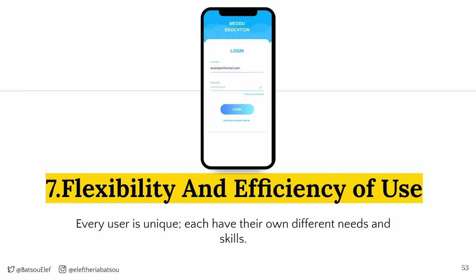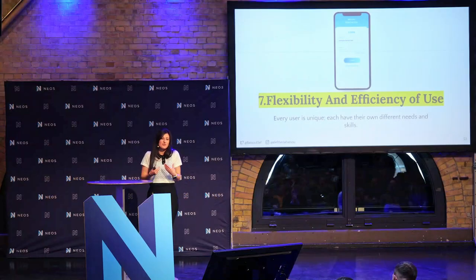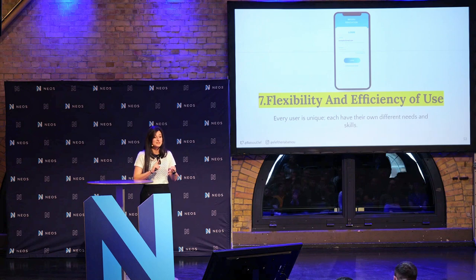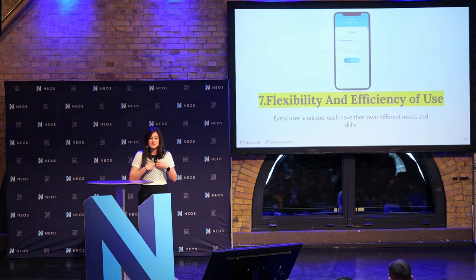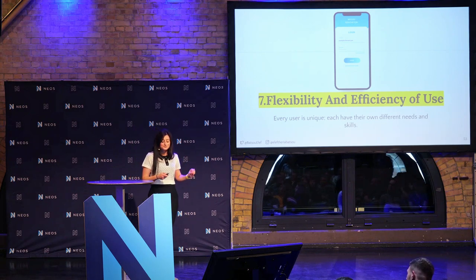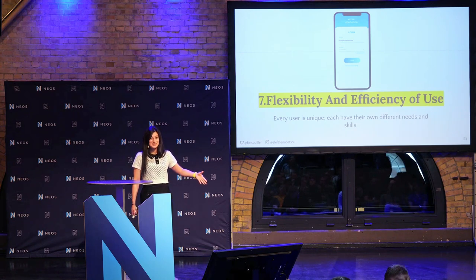The seventh rule is flexibility and efficiency of use. We have different kinds of users: first-time users and power users who work on our product every day and know how things work. We want to provide things for both types and those in the middle. First-time users may need documentation and guidance, while power users want to do things fast, maybe extend the product or connect it with something else. We should be able to provide something for everyone. Sometimes we forget about first-time users because we use our product a lot — let's not do that.